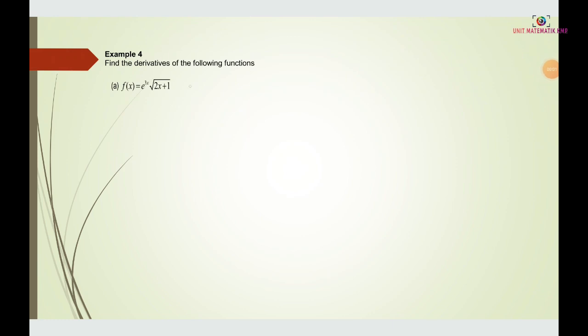Example 4: find the derivative of the following function. We have f(x) equals e to the power of 3x times 2x plus 1. We can see that e is exponential and we have a square root, so there are two different functions multiplied together. We assume u and v and apply the product rule. So u equals e to the power of 3x and v equals (2x plus 1) to the power of 1 over 2.